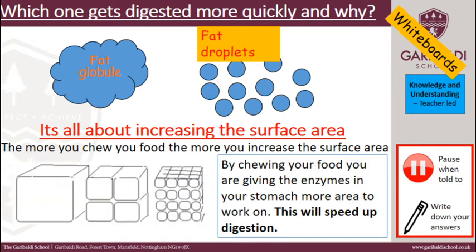If you look at this diagram it helps you. We have the cube, or your grape — you chew your grape and you are increasing the surface area the enzyme can work on. And if you keep chewing it, you will increase the surface area even more, speeding up digestion.